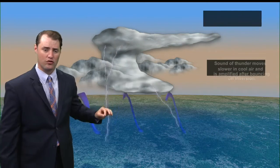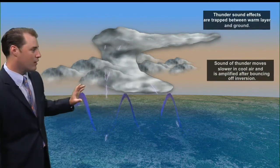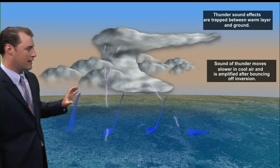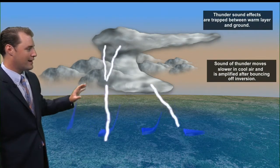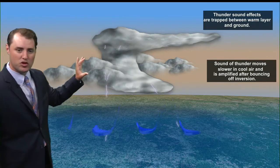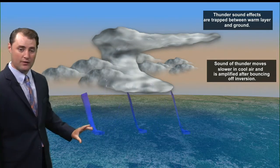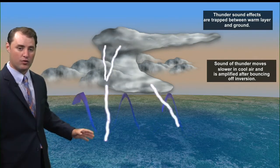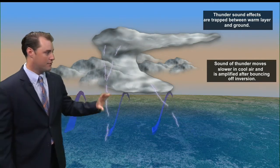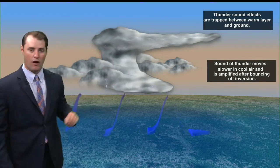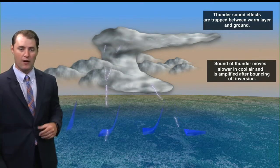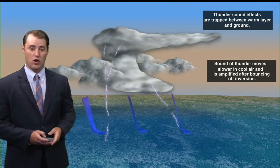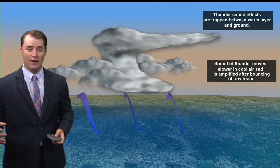When this occurs, the sound of thunder created by the lightning gets trapped in between this warm layer and the cooler layer at the ground. So it starts to bounce off — it bounces off that warmer layer and the ground — which amplifies the sound of thunder and makes it sound louder.